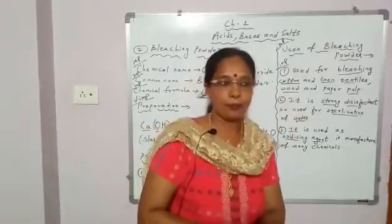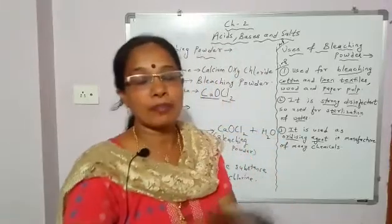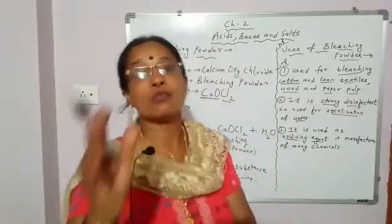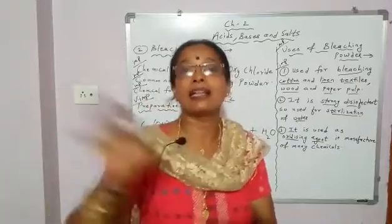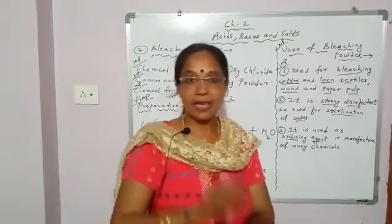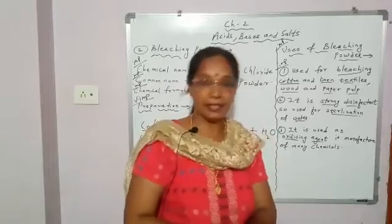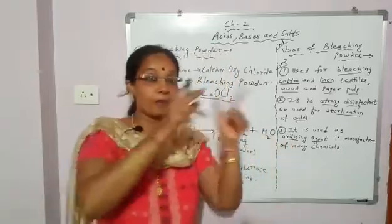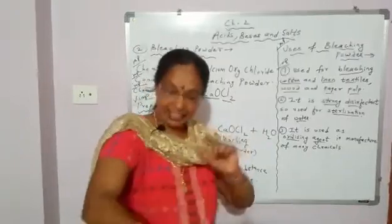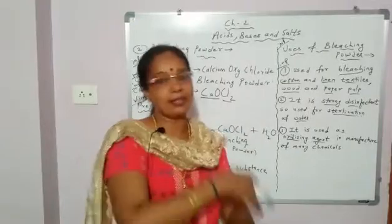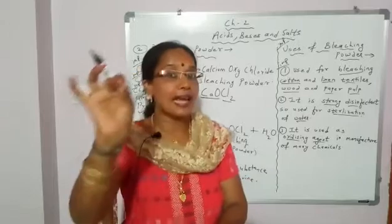So based on this, the question which can be asked is: name a substance A, or substance X, or substance Y, or substance B, which is yellowish white in color and has a strong smell of chlorine. You should remember the properties and uses of the chemicals we are discussing because direct questions never come — the properties or uses are given as clues.